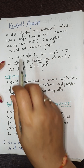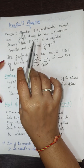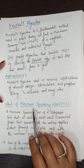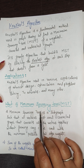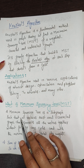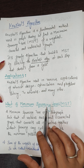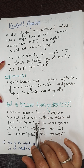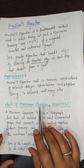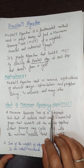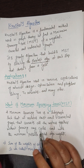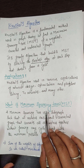Kruskal's algorithm is used to find the minimum spanning tree. A minimum spanning tree is a sub-graph that includes all the vertices of the given graph. It should be connected and should not have any cycles or loops. All vertices must be included — if the main graph has seven vertices, the sub-graph must also include all seven vertices.